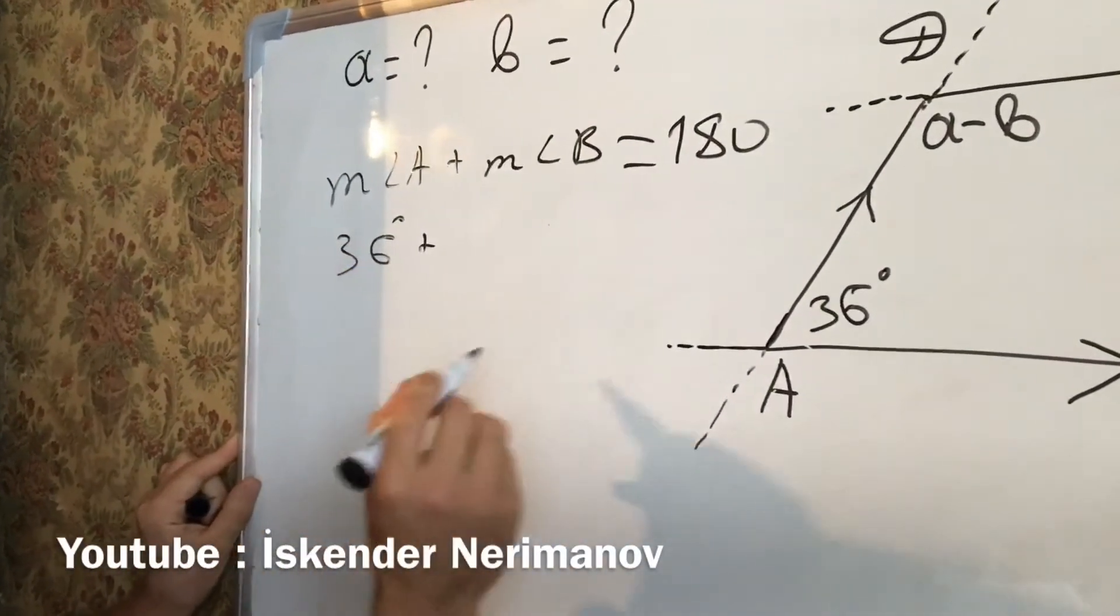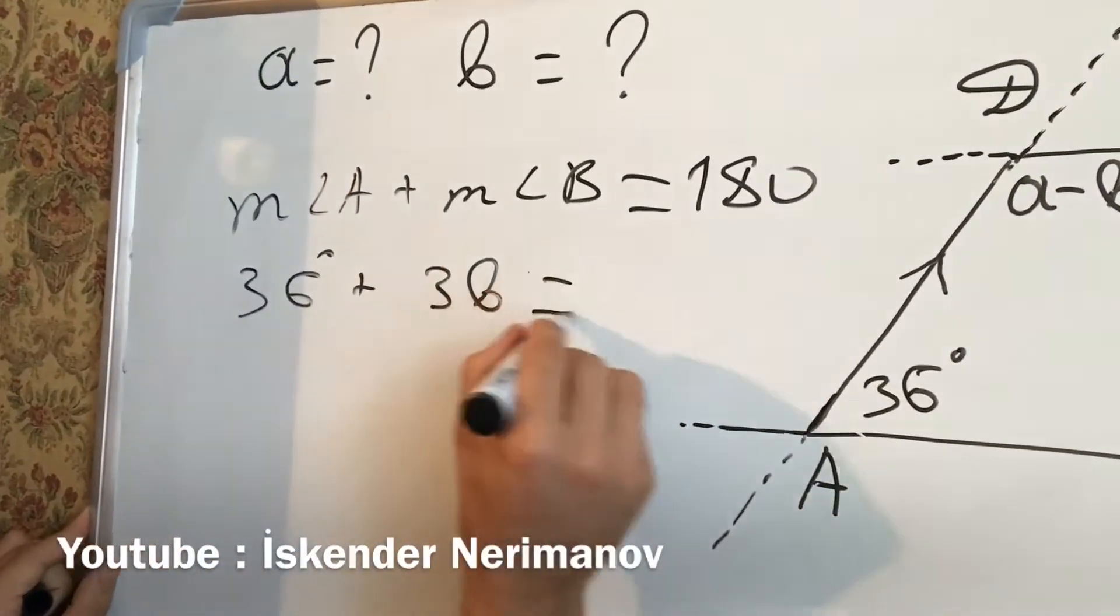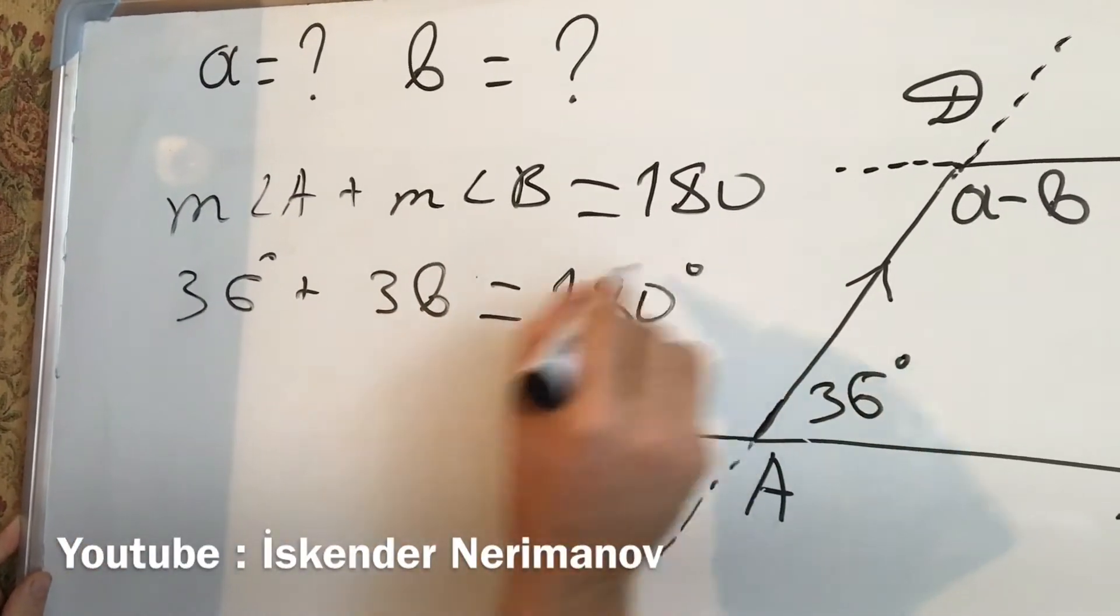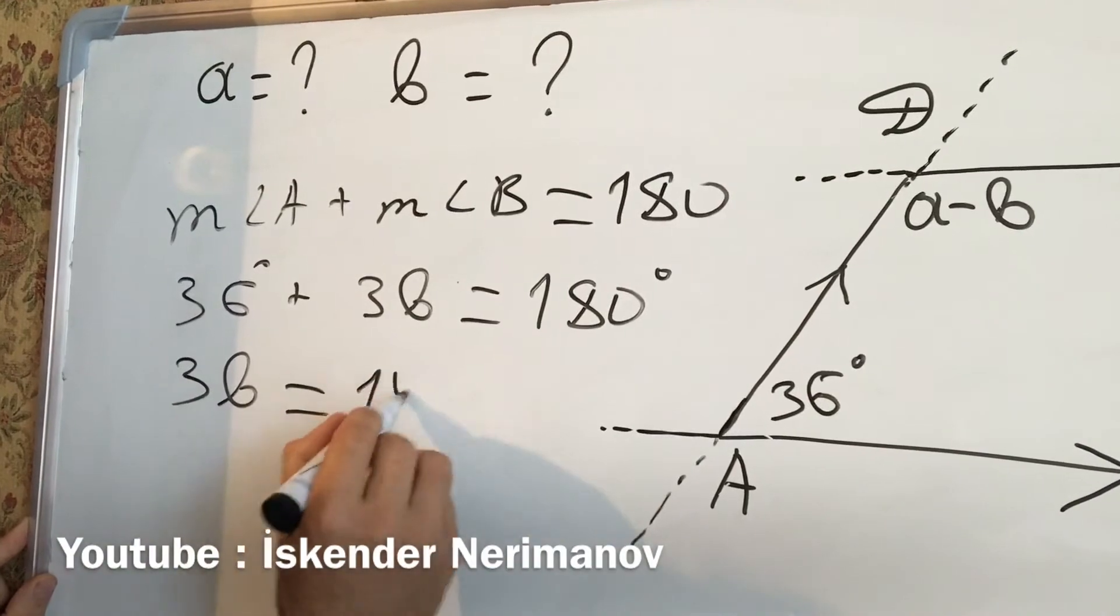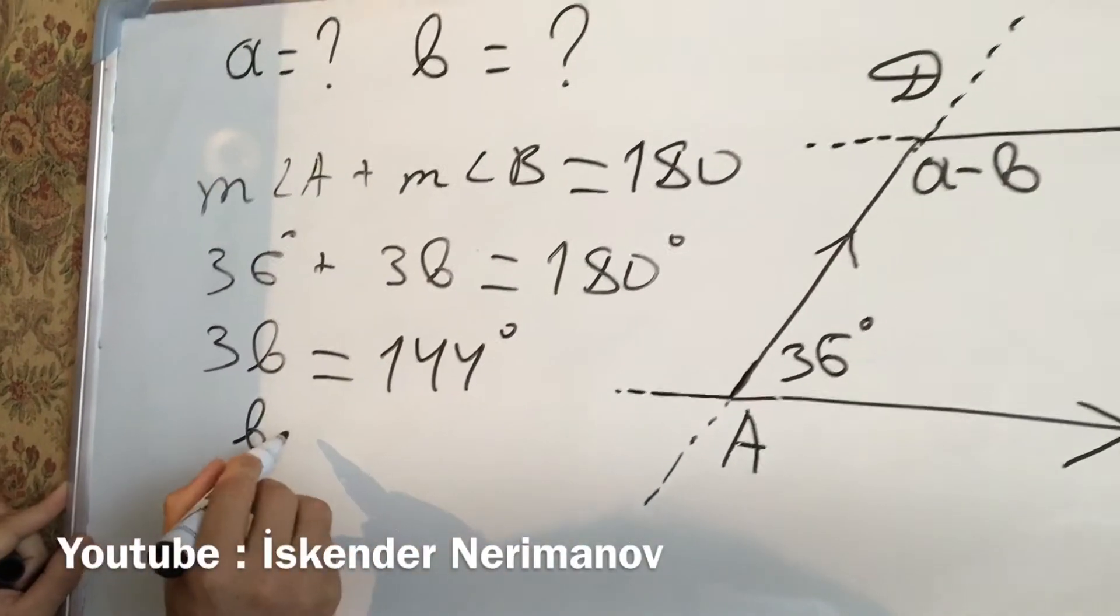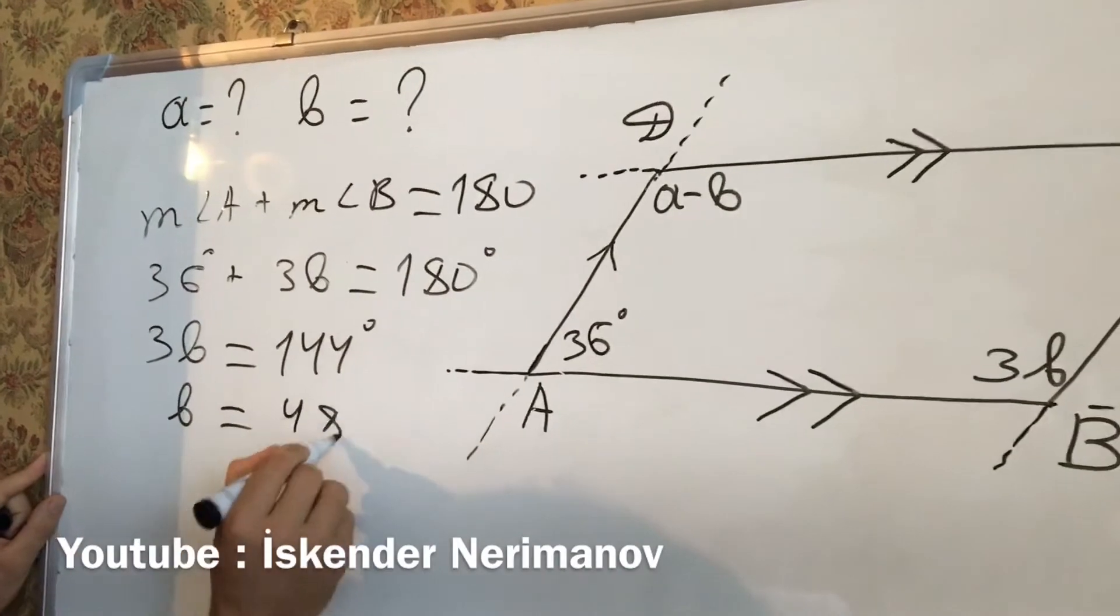3C plus 3B equal to 180. 3B equal to 144. B equal to 48 degrees.